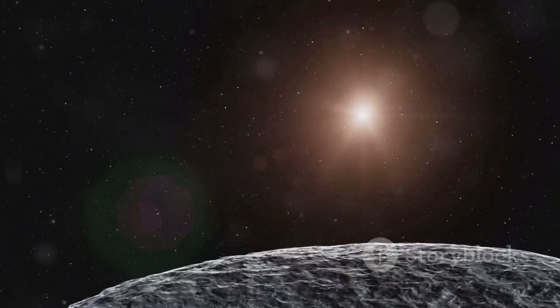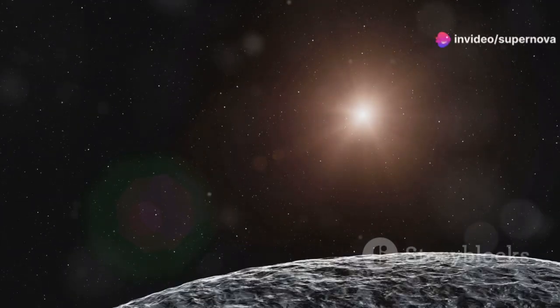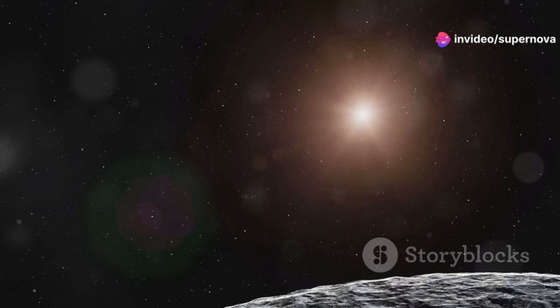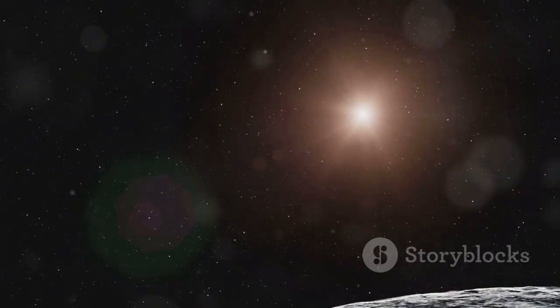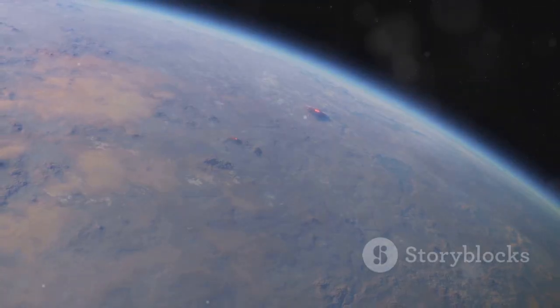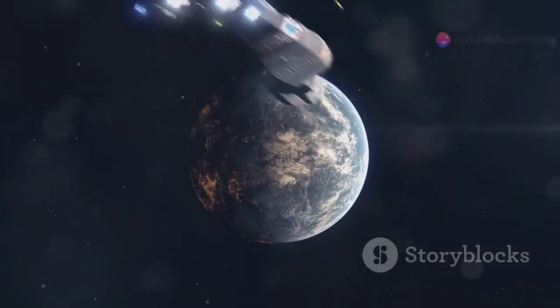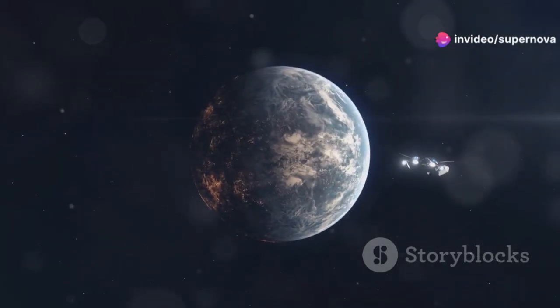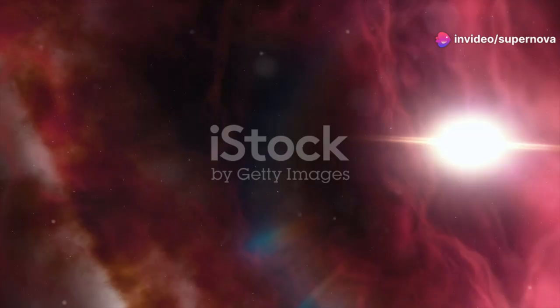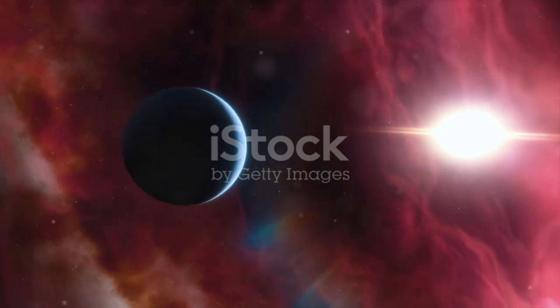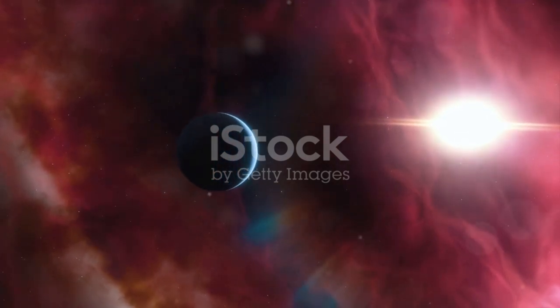The habitable zone is a region around a star where conditions are just right for liquid water to exist on a planet's surface. This zone is often referred to as the Goldilocks zone because, like the porridge in the fairy tale, the conditions are not too hot and not too cold, but just right. Liquid water is essential for life as we know it. Without it, life as we understand it would not be possible. So finding a planet in the habitable zone is a big deal. It raises the possibility that life could exist elsewhere in the universe.